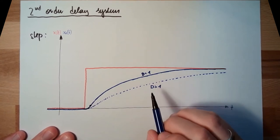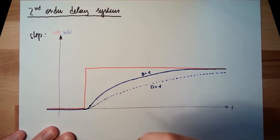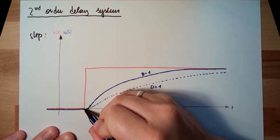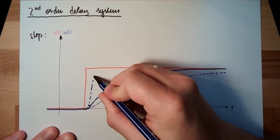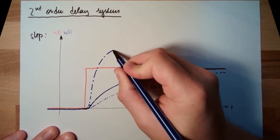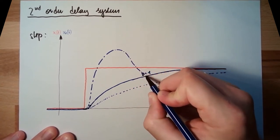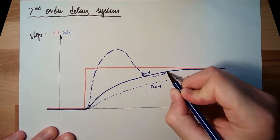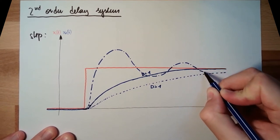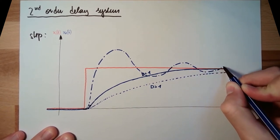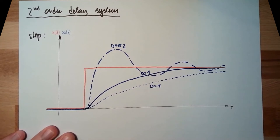And if D is below one, around 0.2 or something like this, then we also start gentle, we go up very straight and fast, we will overshoot here, and then we start to swing, and the swinging is damped.